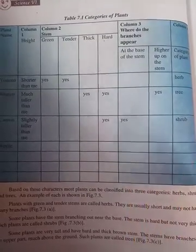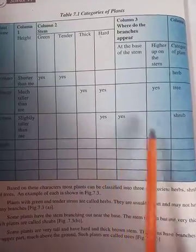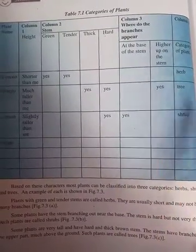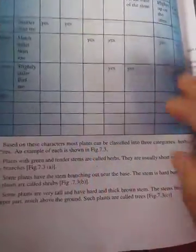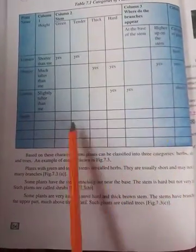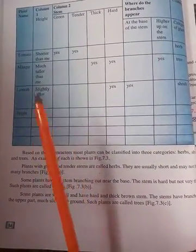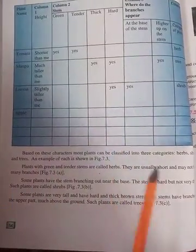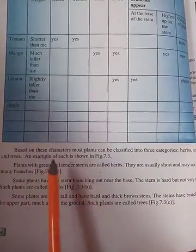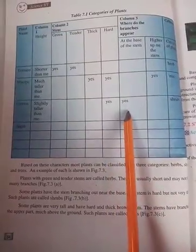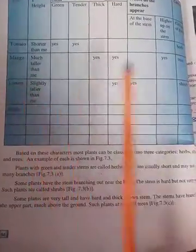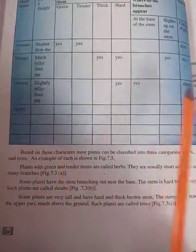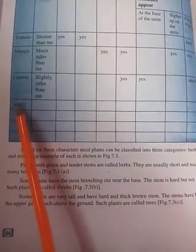On the basis of the nature of the stem — whether strong or hard, soft or hard — and the length of the plant, plants are categorized into herbs, shrubs, and trees, as shown in the above table. The tomato plant is a herb, mango is a tree, and lemon is a shrub. Apple is also a tree.